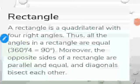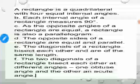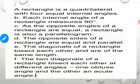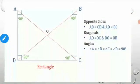A rectangle is a quadrilateral with four right angles — all angles are 90 degrees. The opposite sides of a rectangle are parallel and equal, and the diagonals bisect each other and are equal. Properties of a rectangle: each internal angle measures 90 degrees; because opposite angles are equal, a rectangle is called a parallelogram. The two diagonals of a rectangle bisect each other at different angles — one obtuse and one acute.